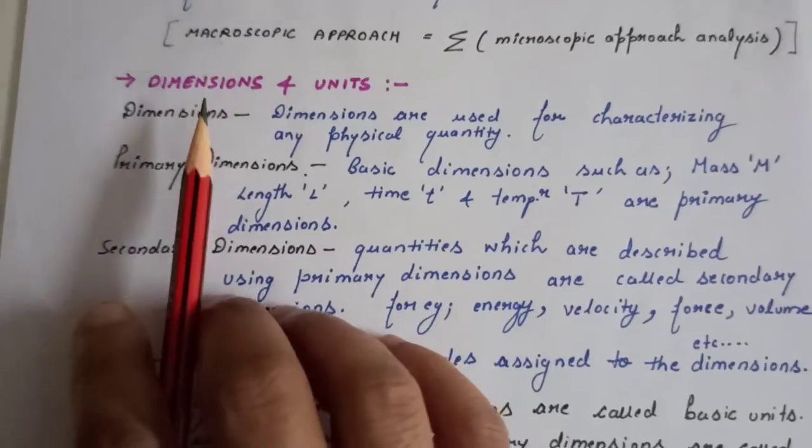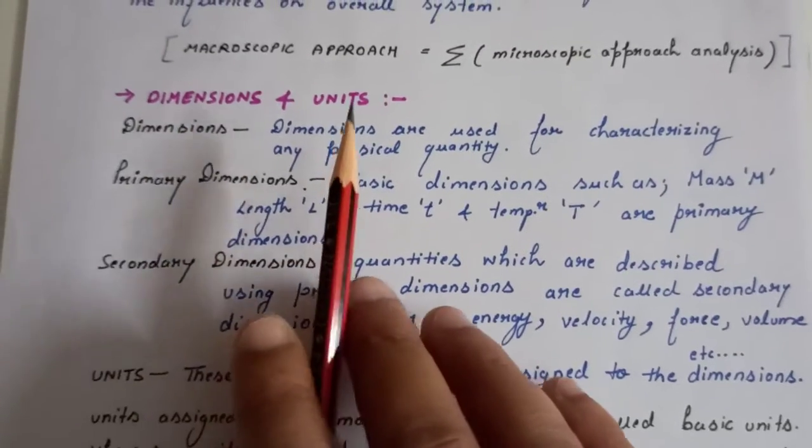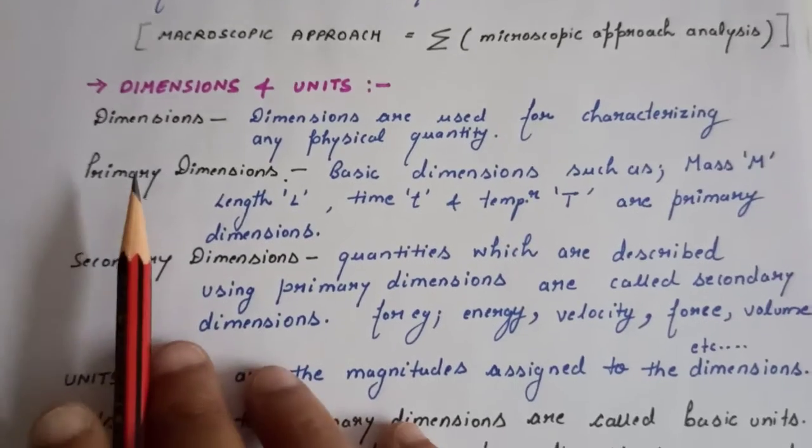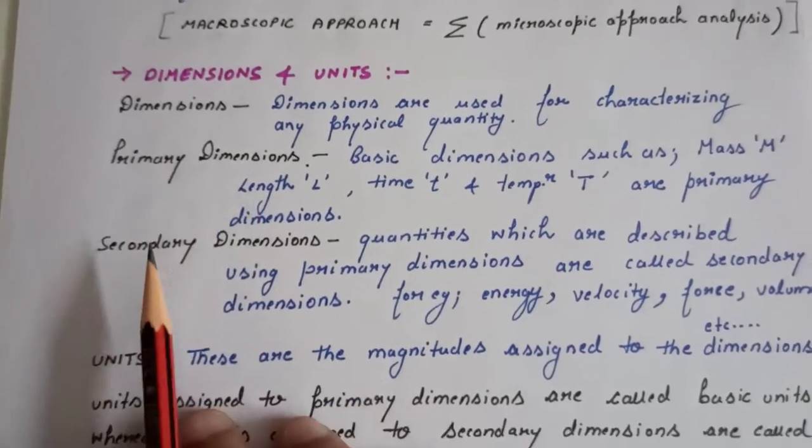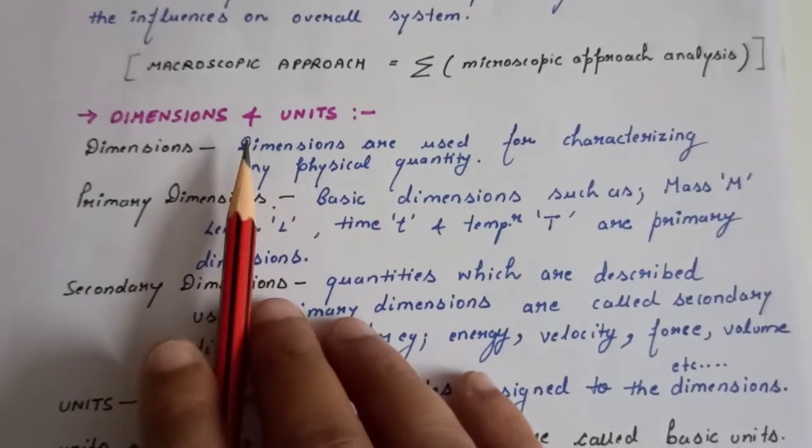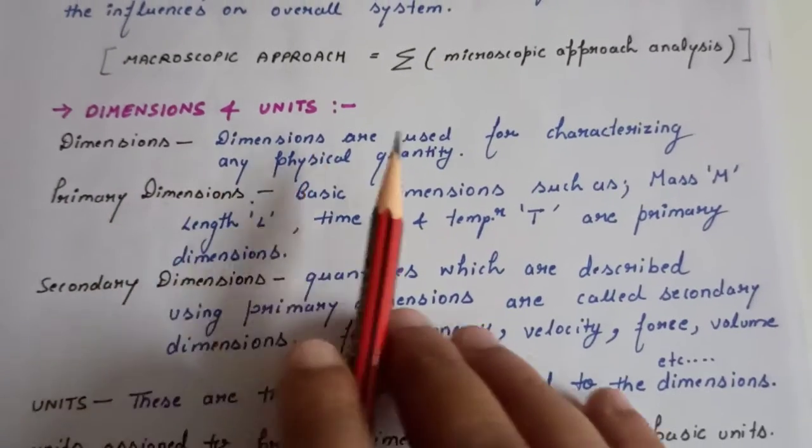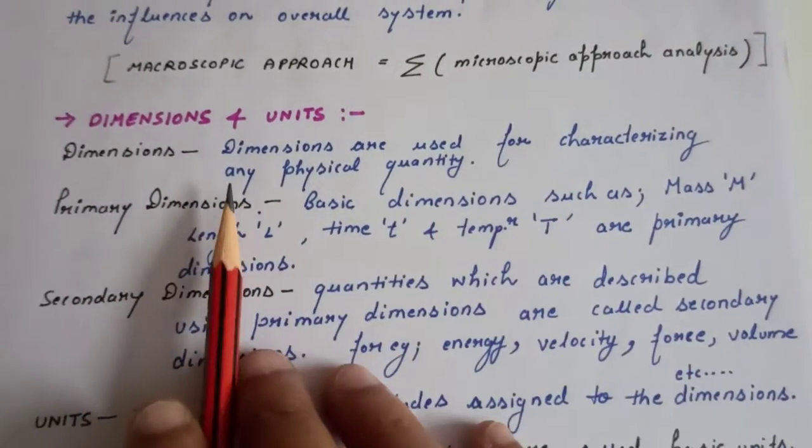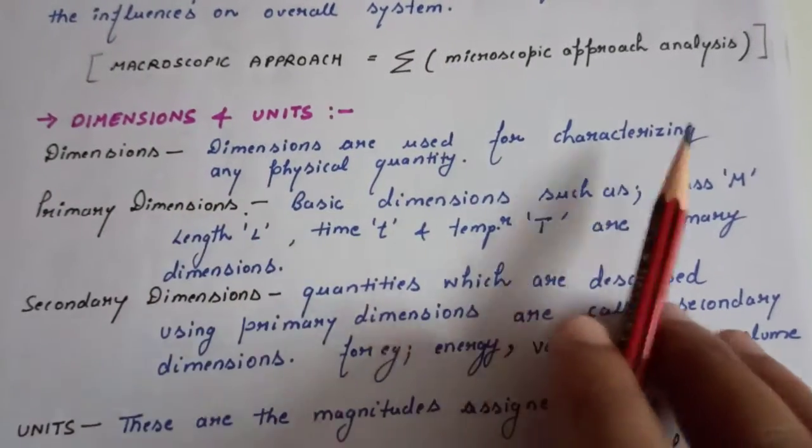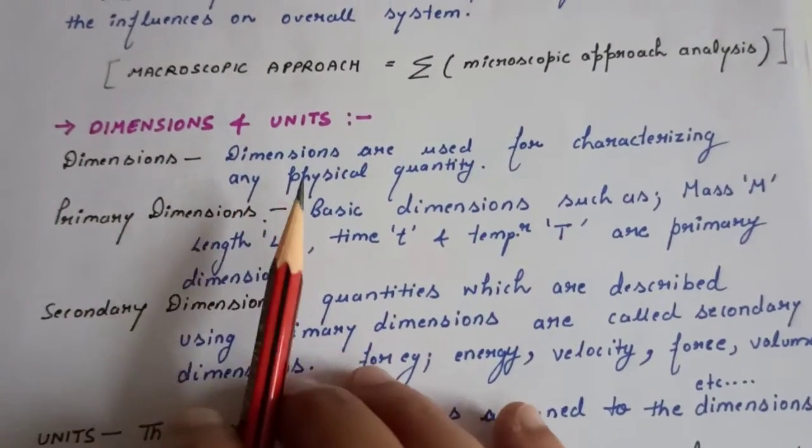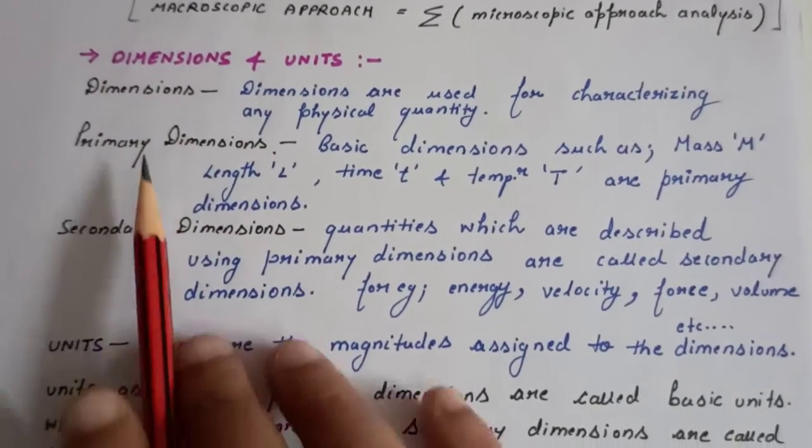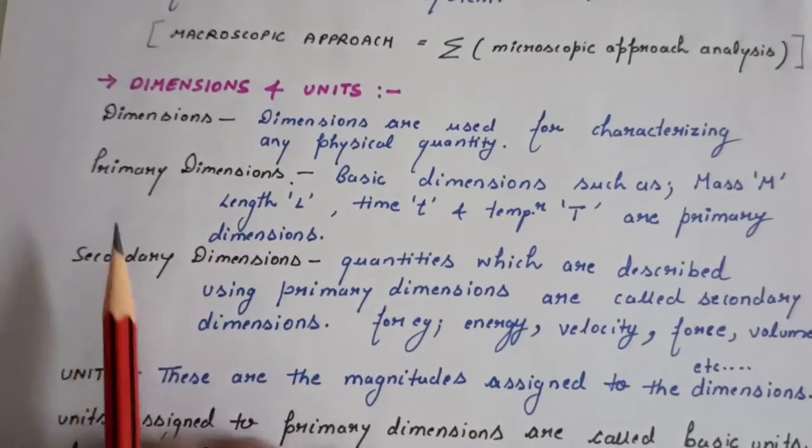Now the next topic is dimensions and units. Dimensions are basically divided into two categories: first is the primary dimensions and second is the secondary dimensions. Dimensions are used for characterizing any physical quantity.